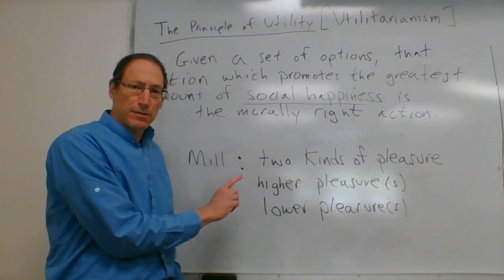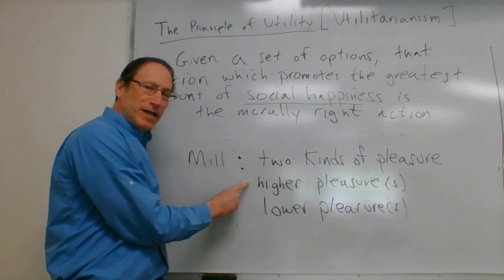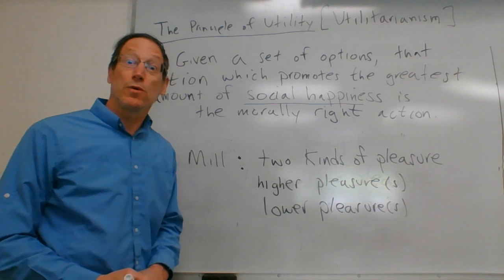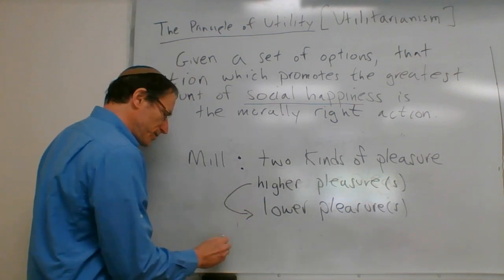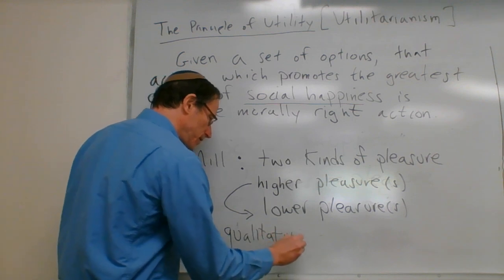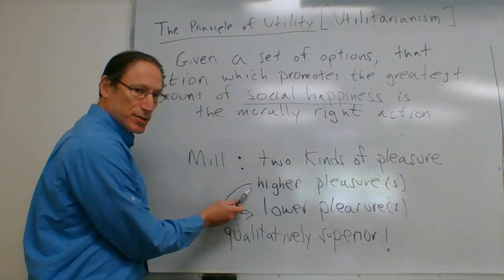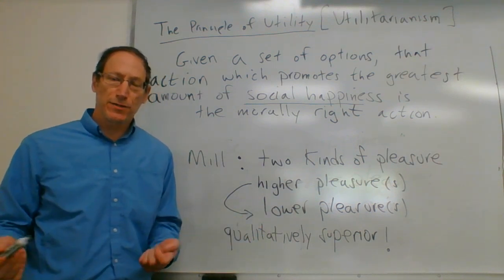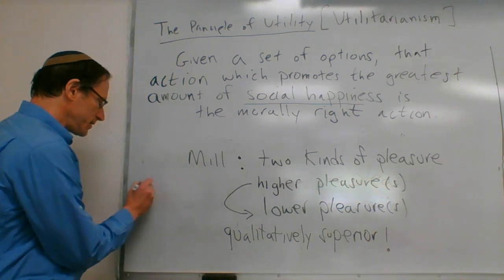Mill is making a further claim: not only are there two kinds of pleasure, but the mental pleasures are higher than the lower pleasures. Specifically, Mill claims they are qualitatively superior — not merely quantitatively superior. Let's talk about the difference between qualitative and quantitative superiority.